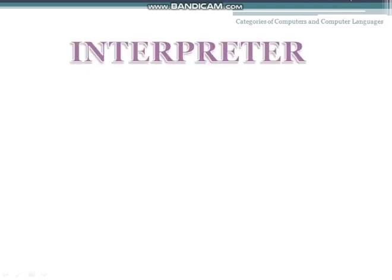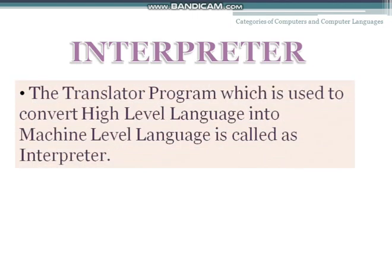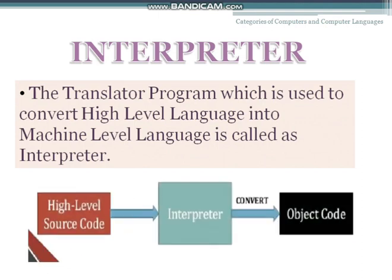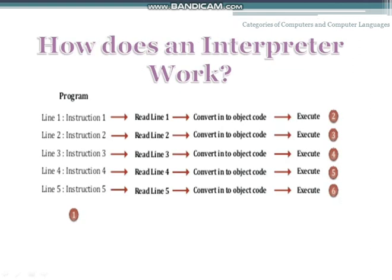The next language processor we are going to discuss is interpreter. The translator program which is used to convert high-level language into machine level language is called an interpreter. You can see in the picture that high-level language is converted into object code — that is machine level language — using an interpreter.